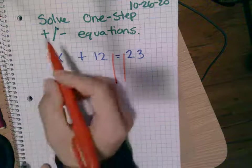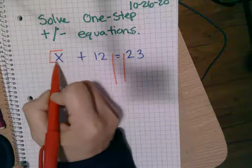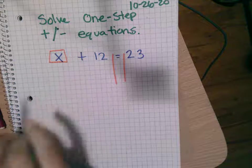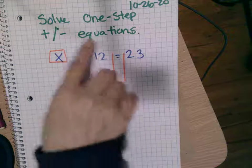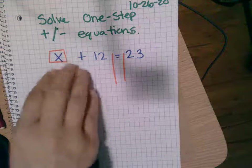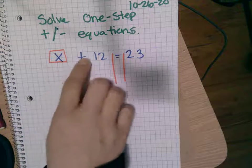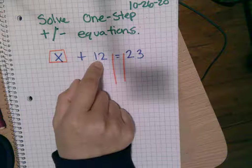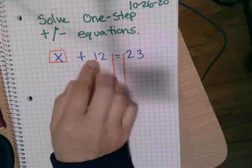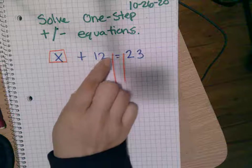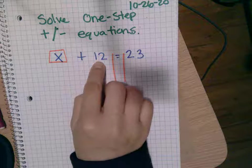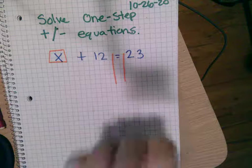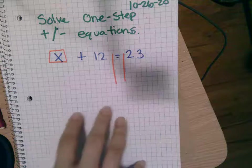Now your goal is to get x by itself. So I have to get rid of everything that's around it. What's on the same side as x? There's a plus sign and there's a 12 and I got to get rid of it. So I want this to equal zero. So what do I do to 12 for it to equal zero?